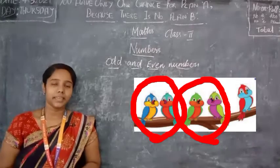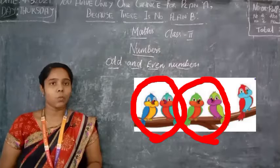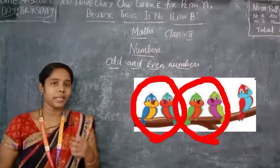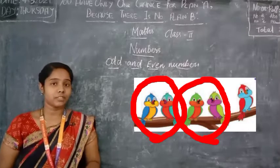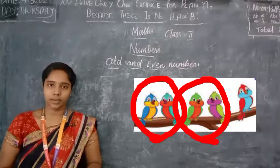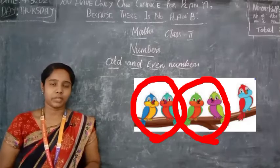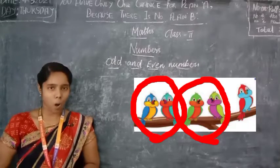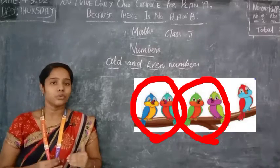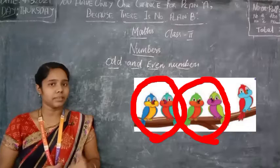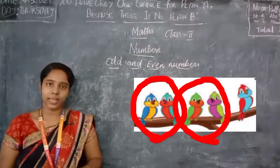In the five birds, we can make only two complete sets of twos, and one bird is left. So the number five is an odd number. This is how you find whether a given number is an odd number or an even number.